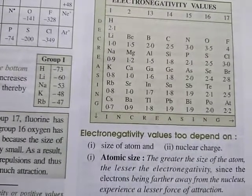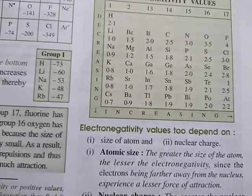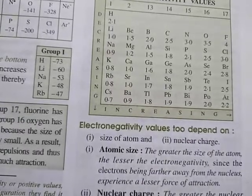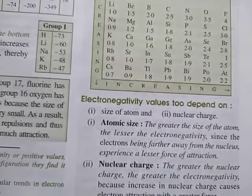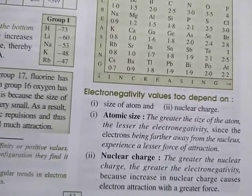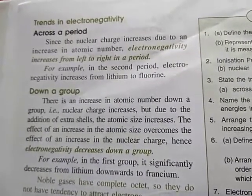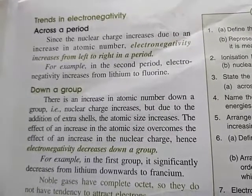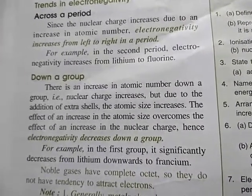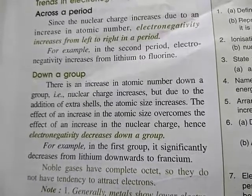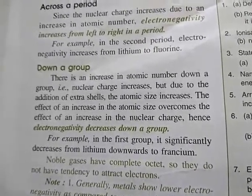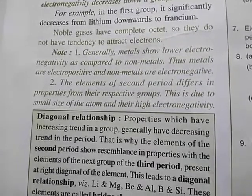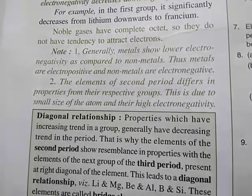Electronegativity values depend on the size of the atom and nuclear charge. The smaller the atomic size, the more will be the electronegativity, and the more the nuclear charge, the more will be the electronegativity. Along the period, electronegativity increases, and down the group it decreases. In general, metals have less electronegativity and non-metals have more electronegativity.